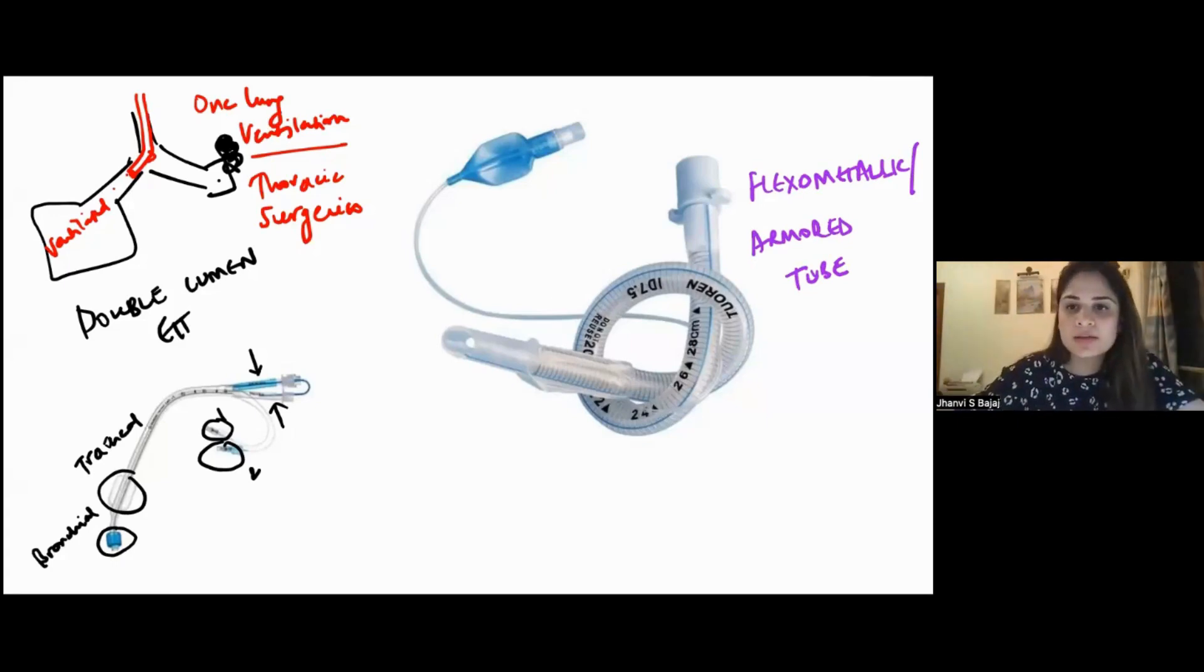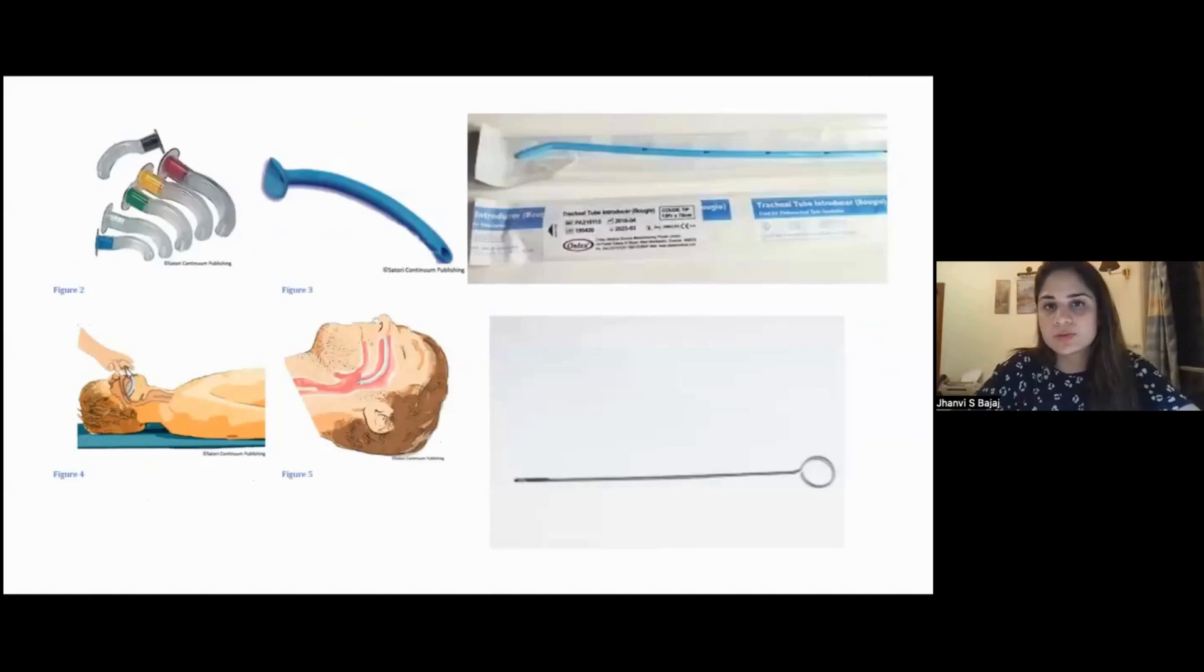This can be used wherever the surgeon is operating. Suppose in this area. So if he tries to put his retractor or his hand on the surgical area on the tube, then the tube should not get kinked or compressed. So wherever you are sharing the airway with the surgeon—mainly oromaxillofacial surgeries or neurosurgeries. In neurosurgeries, you turn the head to one side. While turning, the tube gets kinked inside, so we prefer to use these tubes.